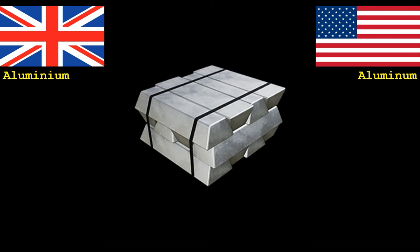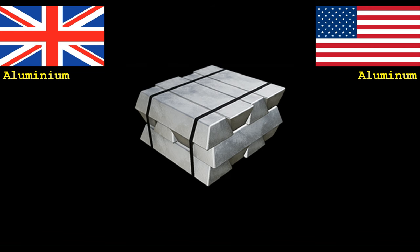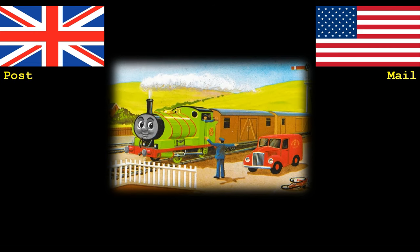One of the common minerals or metals that would be transported by rail in the UK is known as aluminium, whilst in America you would pronounce it aluminum. Finally railways can also be used for transporting letters and parcels. In the UK this would be known as post, transported on a post train or in a post van. In America this would be known as mail, transported in a mail train or a mail truck. You also need people to deliver post or mail, and this person would be known as a postman or mailman.